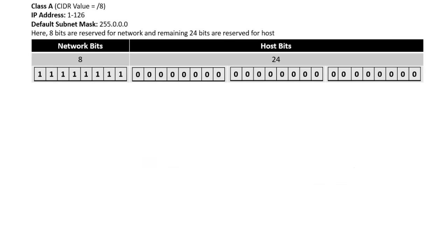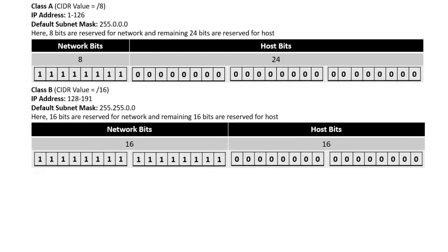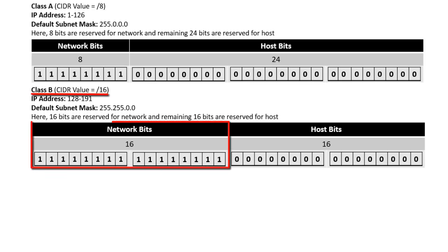Now let's move on to Class B. Class B IP address starts from 128 to 191. Its default subnet mask is 255.255.0.0 and the default CIDR value is 16, because the total number of network bits in a Class B IP address is 16.